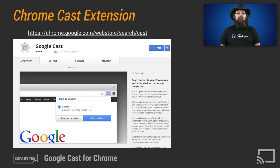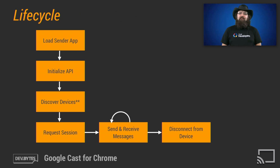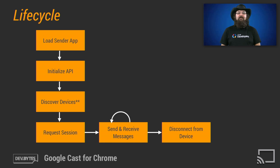The Cast extension is what allows web senders to communicate with Cast receivers. With Chrome installed and the Cast extension ready to go, let's take a peek at the Cast sender lifecycle for a moment. Once a Cast sender application has been loaded, the app will detect and initialize the Cast APIs, get notified about available receivers, connect to a receiver, and begin exchanging messages over the established connection. Closing out the lifecycle is disconnection from a receiver device.